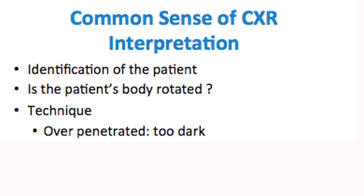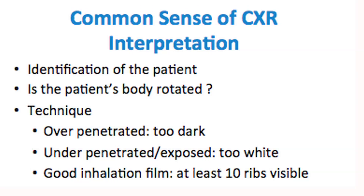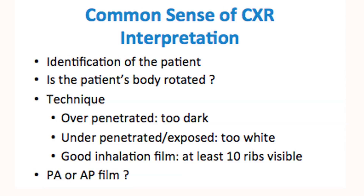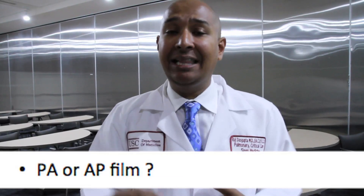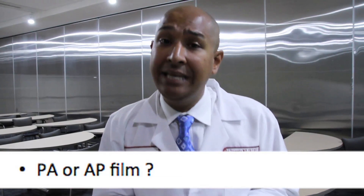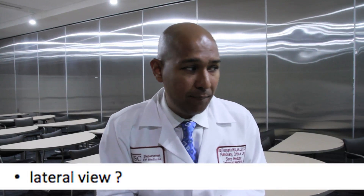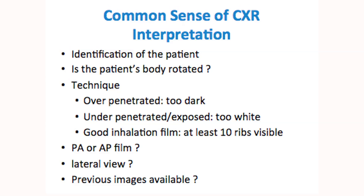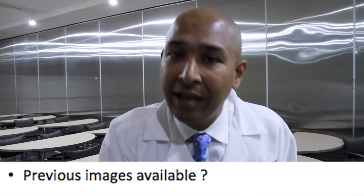Is it under-penetrated — is the chest x-ray very light or does it have a white appearance? Is it a good inhalation film, meaning can you see around 10 ribs? The type of film — is it a PA, which stands for posterior-anterior, the chest x-ray we want if the patient can go to radiology? That lets us make comments such as cardiomegaly. Or is it an AP film, a portable film used often in the medical ICU? Always look to see if there's a lateral view to help localize the pathology. And most importantly, are there previous images available? This helps determine how long a lesion, mass, or nodule has been there.